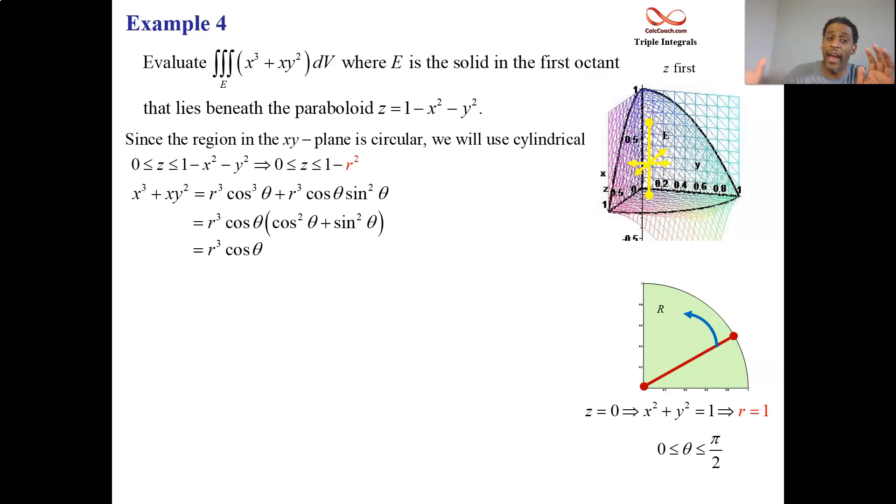But don't forget, there's a hidden factor of r that comes in as well to that integrand from r dr d theta. So, we put that r with the other r all together. We're talking about r to the fourth.